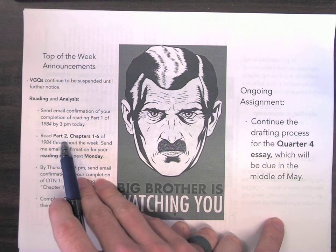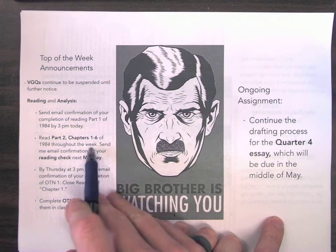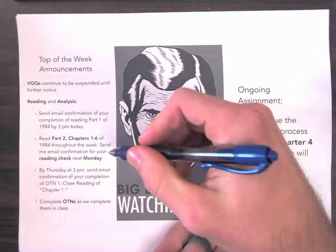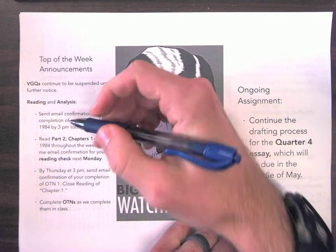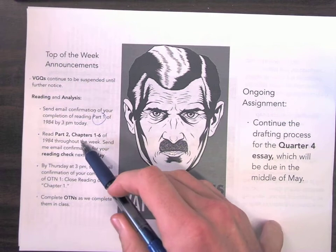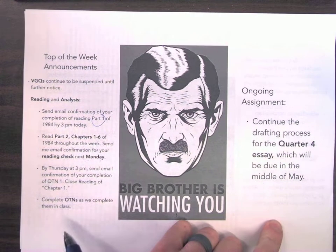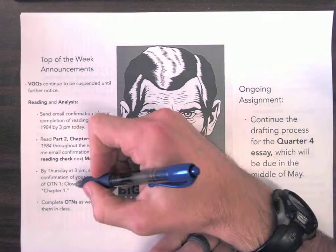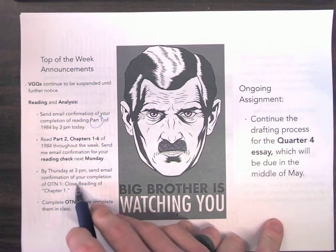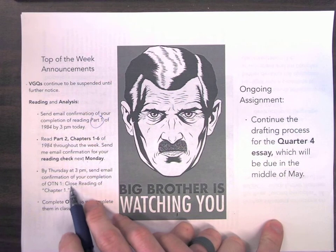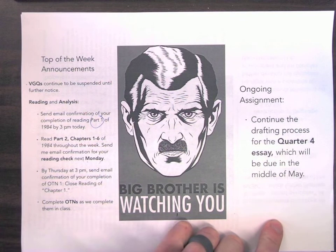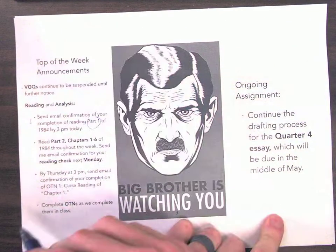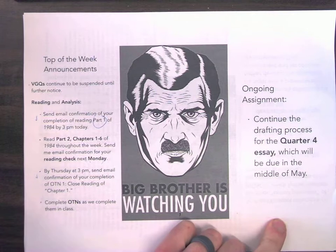Then throughout the course of this week, you need to be reading Part 2, Chapters 1 through 6 of 1984. That reading check needs to be sent to me by next Monday. So the reading check for Part 1 is due by today at 3 p.m. Your reading for next week needs also to have a reading check confirmed by next Monday. And then by Thursday at 3 p.m., I need email confirmation that you completed OTN 1, which was our close reading of Chapter 1 together.